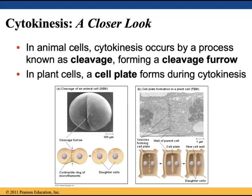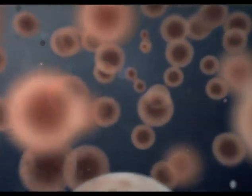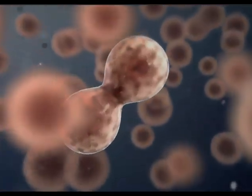Plant cells have a different process for cytokinesis. Remember, plant cells have both a plasma membrane and a rigid cell wall made of cellulose. During cytokinesis in plant cells, a cell plate forms to separate the two identical daughter nuclei into separate cells. Prokaryotes like bacteria and archaea have a unique form of cell division called binary fission. In binary fission, the chromosome replicates beginning at the origin of replication — a special part of the genome that initiates DNA replication. Prokaryotes like bacteria have a circular genome called a plasmid, unlike eukaryotes which have multiple strands of linear chromosomes. Once replication is complete, the two daughter chromosomes actively move apart and the plasma membrane pinches inward, dividing the cell into two.